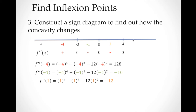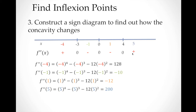For the last interval, x greater than 4, we use the test value x = 5: f''(5) = 200, which is positive. So this is our complete sign diagram.